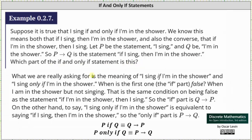What we are really asking for is the meaning of I sing if I'm in the shower and I sing only if I'm in the shower. When is the first one meaning the if part false? The statement I sing if I'm in the shower is false when I'm in the shower but not singing. This is the same condition on being false as the statement if I'm in the shower then I sing. Remember an implication is false when the hypothesis is true and the conclusion is false. So the if part is if Q then P.